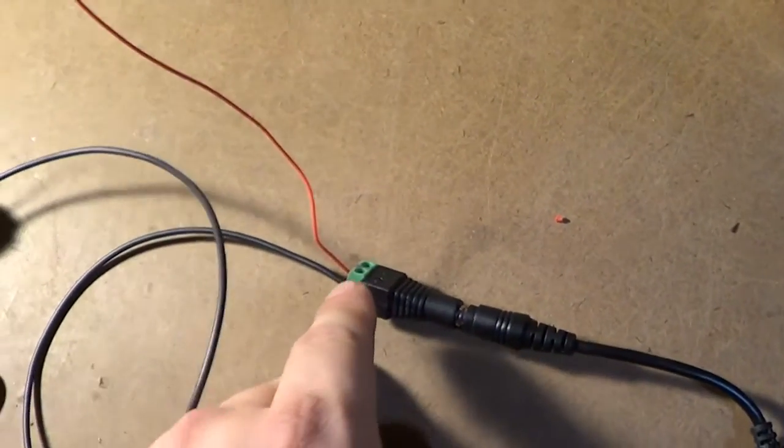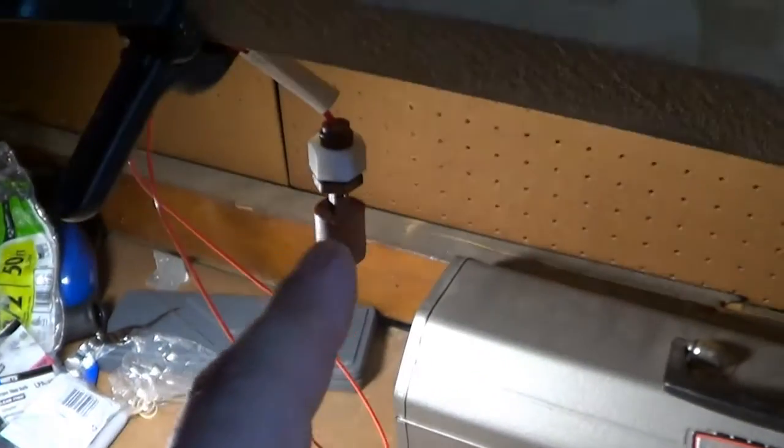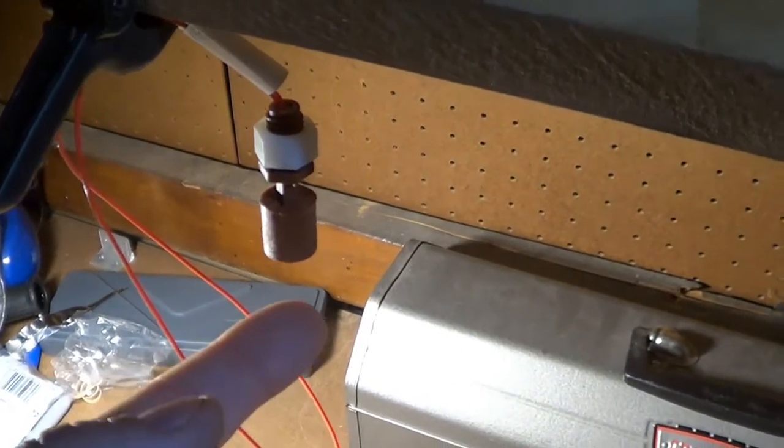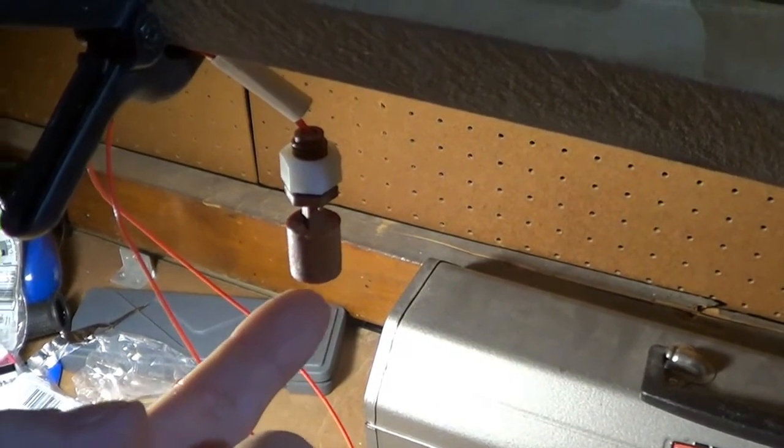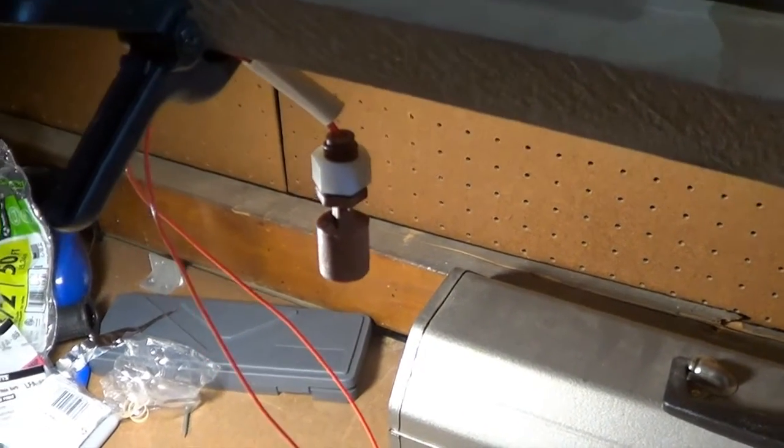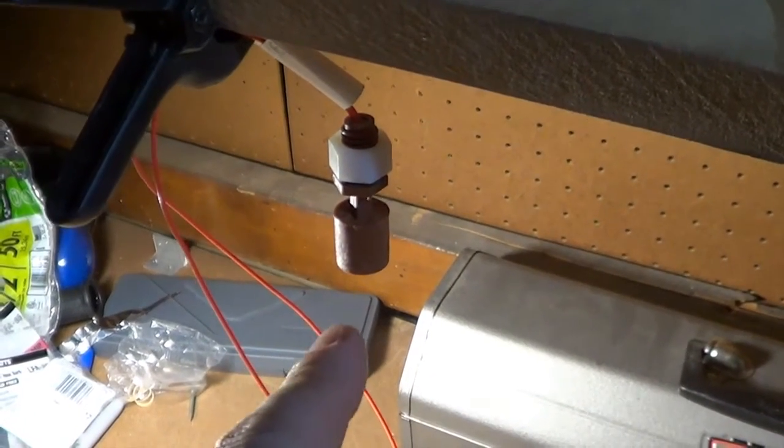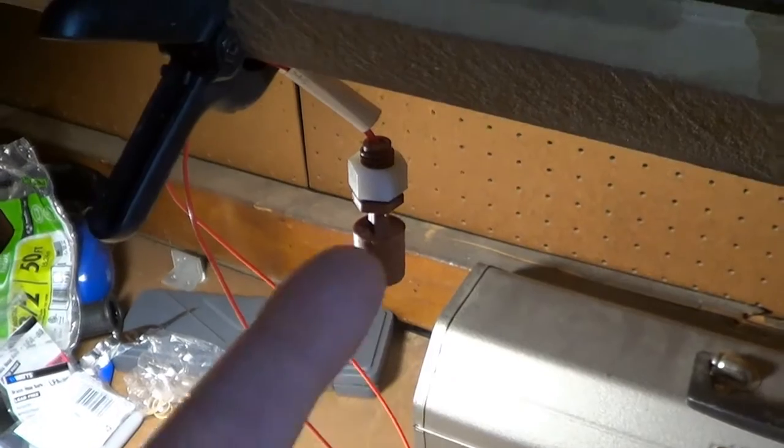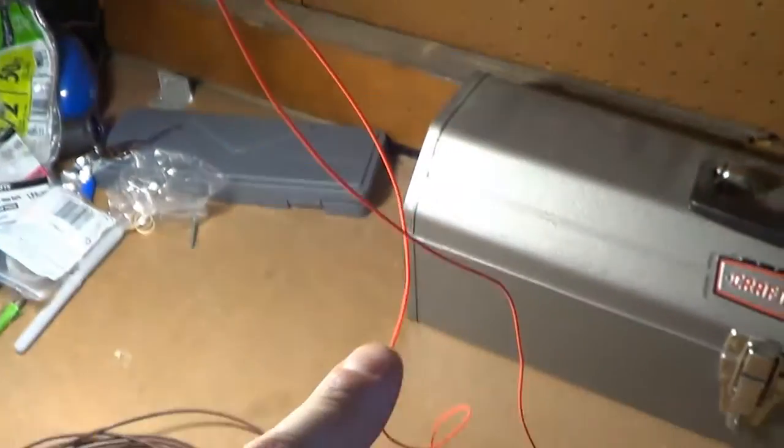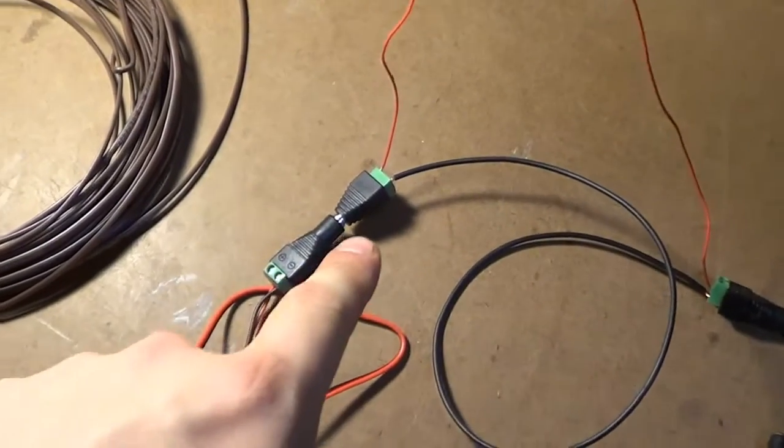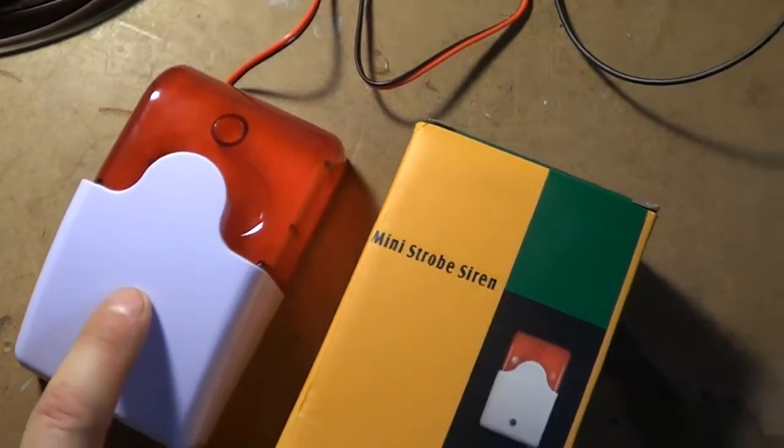So from there, we have two wires. We have the positive, which is going up here and into our float switch. This is a normally open float switch, so the signal or the circuit is not connected while the float is down. And then when the float goes up, it connects the circuit. The wire that comes out of there comes down into another one of these plugs, and then into our mini-strobe siren.